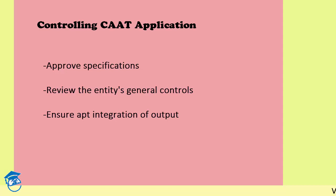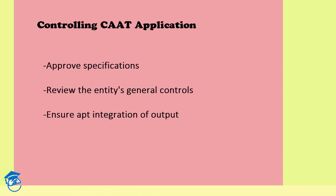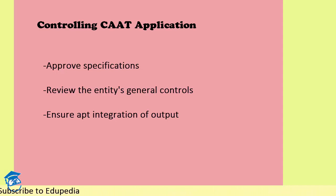There are specific procedures necessary to control the use of CAAT depending on the particular kind of application. In establishing control, as an auditor you need to consider: number one, the approval of specifications — what customized specifications you need according to your own needs. You need to approve those specifications and conduct a review of the work being performed by that CAAT to verify it is providing what you wanted.